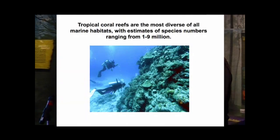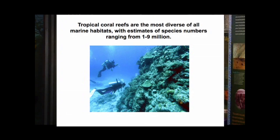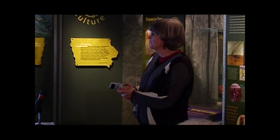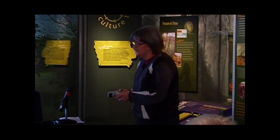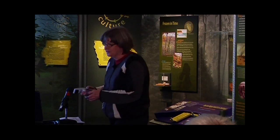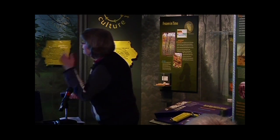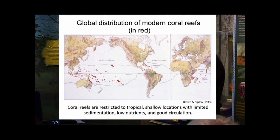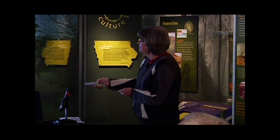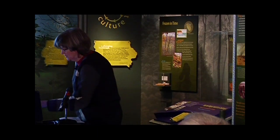Tropical coral reefs are the most diverse of all marine habitats, with estimates of species numbers ranging from one to nine million. Some estimate that as many as a third of all marine species live on coral reefs, and they've been commonly referred to as the tropical rainforests of the sea. Coral reefs occur across the globe in tropical regions, restricted to shallow locations with limited sedimentation, low nutrients, and good circulation.